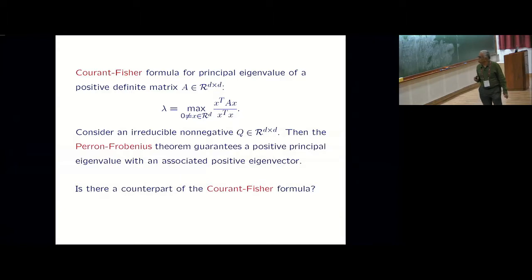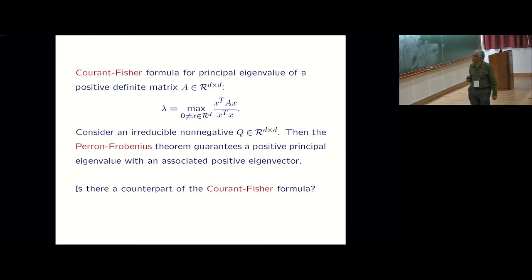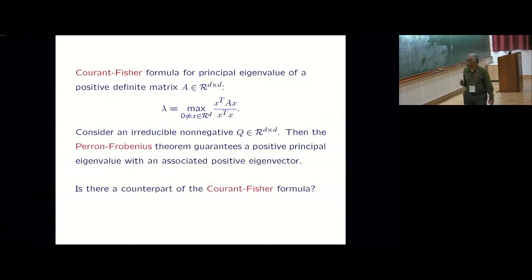Suppose one considers, instead of a positive definite matrix, just a non-negative matrix, an irreducible non-negative matrix Q. The most famous result is the Perron-Frobenius theorem which tells you that it has a positive principal eigenvalue and an associated positive eigenvector. The question is whether there's a counterpart of this formula for non-negative matrices, not positive definite.